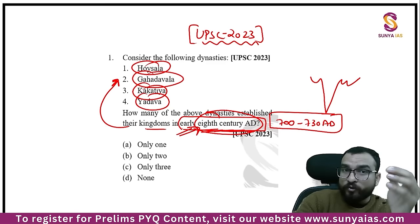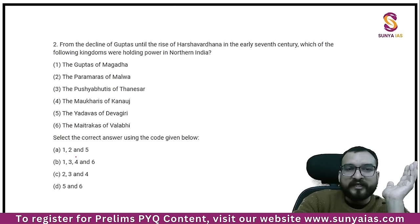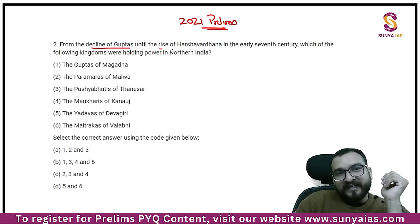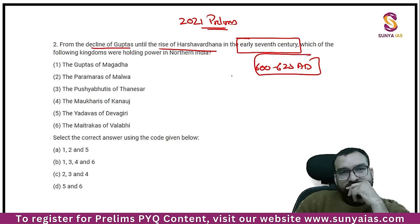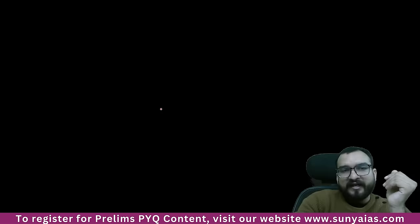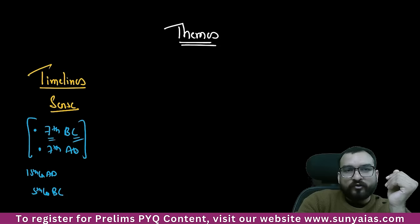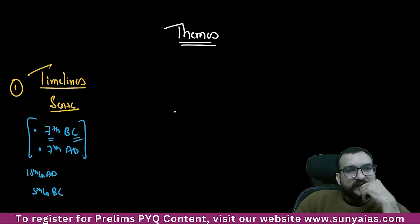UPSC already knows that you must have this understanding of timelines, and then they ask in detail about that particular time. The 2023 Prelims question — last year's Prelims — and surely in 2024 I am seeing one question on timeline-based content, like what was happening in 6th century BC, which political happenings were there. See the 2021 Prelims question: from the decline of Guptas until the rise of Harshvardhana in the early 7th century — meaning 600 to 625 AD — they are focusing upon that early 7th century AD. Were there Guptas, Pushyabhutis, Mokharis, Matrakas? Timeline sense is very important.